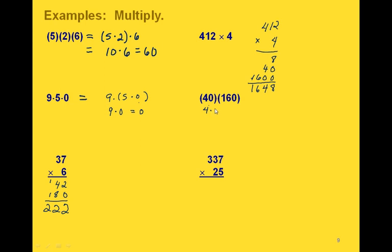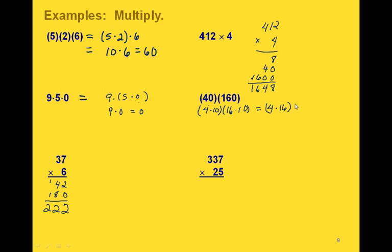What if we want to multiply 40 times 160? We can separate 40 into 4 times 10, and 160 into 16 times 10. Using the associative and commutative properties together, since we have all multiplications, we can rearrange: this is the same as 4 times 16 times 10 times 10. 4 times 16 gives us 64, and 10 times 10 gives us 100, so 64 times 100 gives us 6,400.